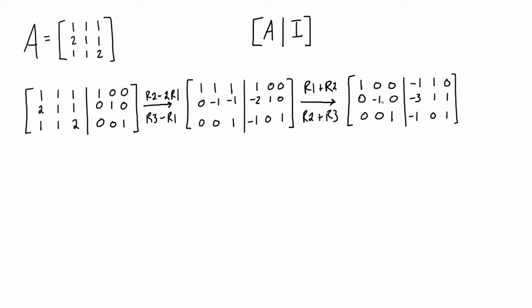And the last thing that we need to do is just multiply row 2 by negative 1. Awesome. So we have reduced A to the identity matrix which means that what we have over on this side is A inverse.